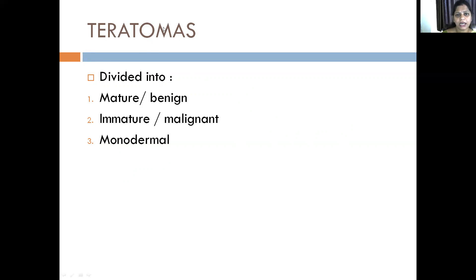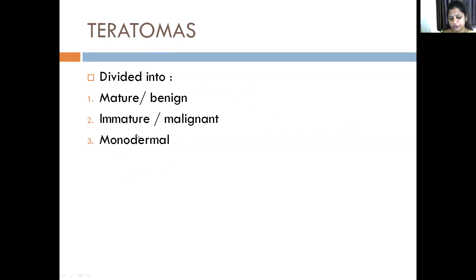Teratomas are tumors that can arise from all three germ layers: the ectoderm, endoderm, or the mesoderm. They can be further divided into mature or benign, immature or malignant, or monodermal tumors. In monodermal tumors, you have carcinoid and struma ovarii.